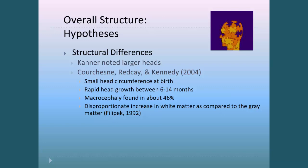Let's talk about overall structure. Connor actually noticed that children with autism have larger heads, and indeed that was returned to later on. A simple tape measure gave us a lot of information. The study by Korczesny and colleagues showed that there was a small head circumference at birth but rapid head growth between 6 and 14 months, and macrocephaly or large head was found in about 46% of children with autism.